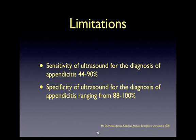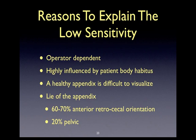While ultrasound is an excellent imaging modality for the diagnosis of appendicitis and carries a specificity ranging from 88 to 100%, the inherent limitation of ultrasound is that it's not a sensitive imaging modality, with a sensitivity ranging from 44 to 90%. There are several reasons to explain the low sensitivity: this is an imaging modality highly dependent on operator skill, highly influenced by patients' body habitus, and healthy appendixes are exceptionally difficult to visualize. The lie of the appendix will also influence the level of difficulty in finding it.